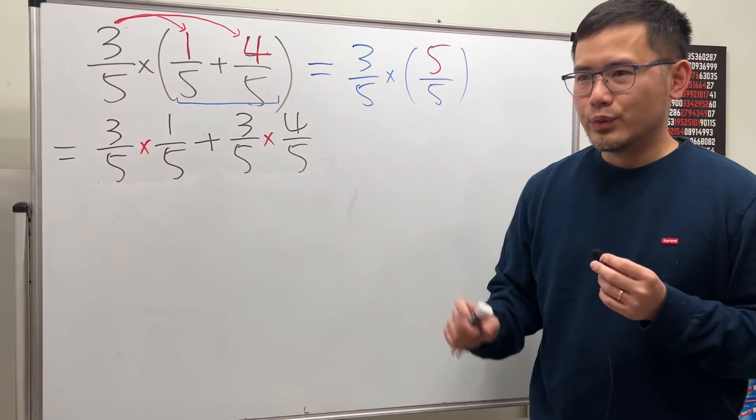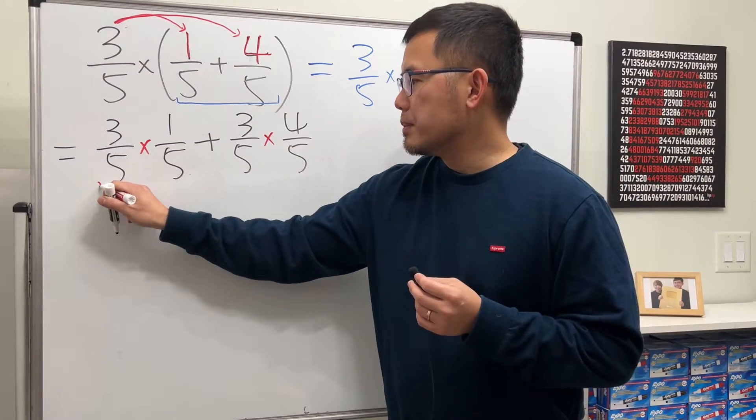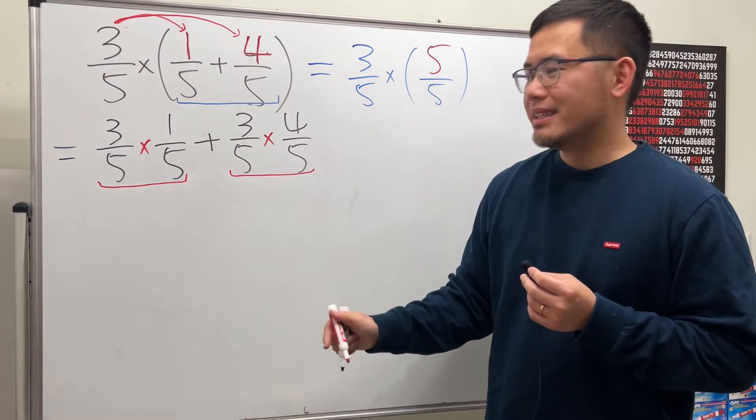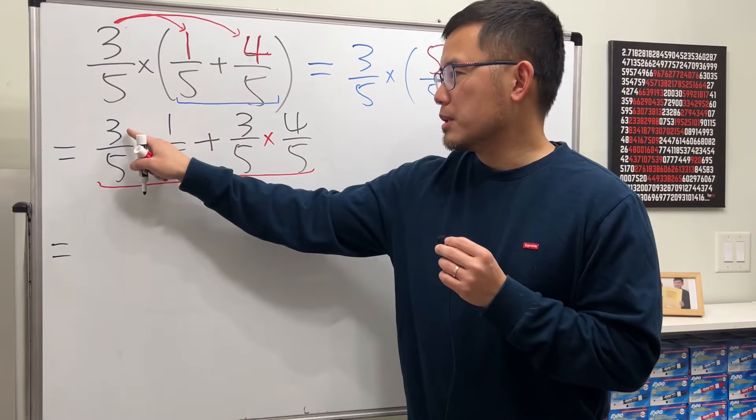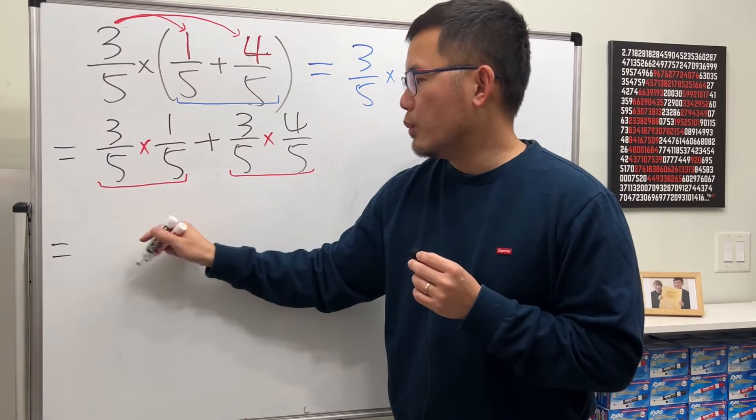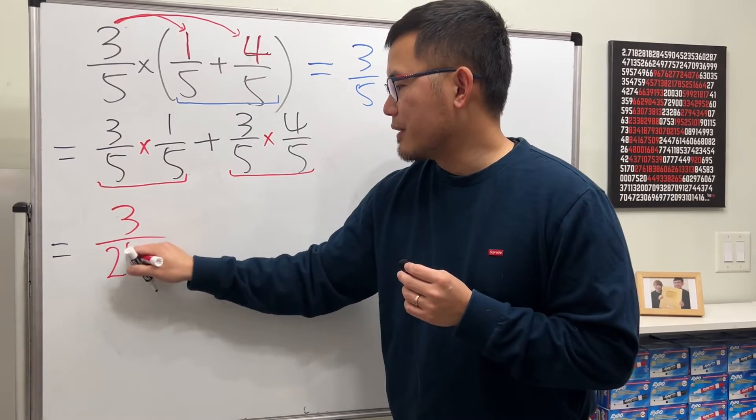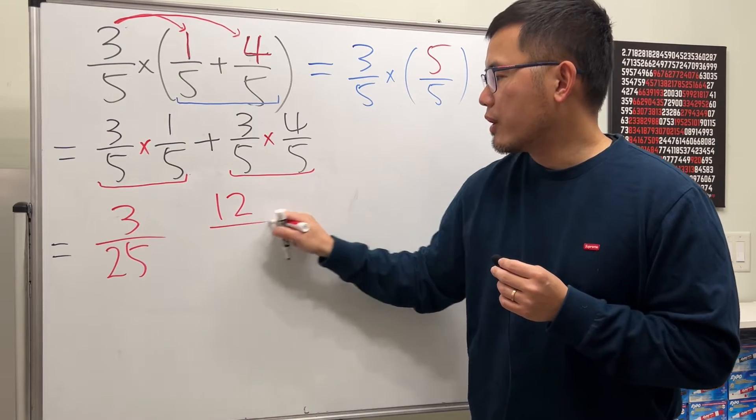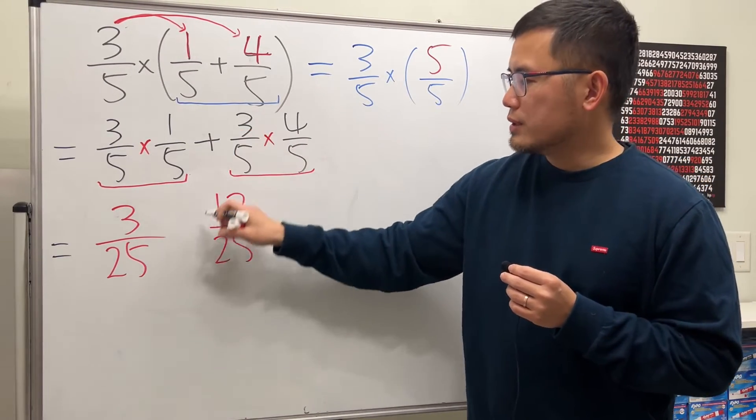All right, now, of course, we will finish the question. By looking at this, we will have to multiply this and that, and then this and that first, before we add. So, let's see. Multiplying fractions, just multiply the top and top. 3 times 1, we get 3. Over 5 times 5, we get 25. And then, let's multiply this and that. 3 times 4 is 12. Over 5 times 5 is 25. And then, of course, at the end, we have to add them up.